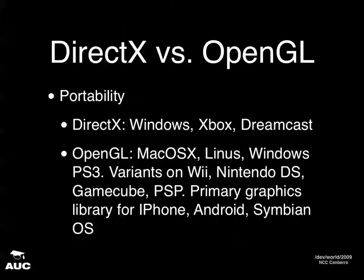DirectX versus OpenGL — portability. DirectX works primarily on the Windows platform as well as Xbox, which was built by Microsoft, and the Dreamcast. OpenGL works on pretty much everything else: Mac OS X, Linux, implementations on Windows, PS3, Wii variants, Nintendo DS, GameCube, PSP, and as you should know, it is the primary graphics library for the iPhone. It's also used on Android and Symbian OS. So the scale of platforms you can develop for with OpenGL is very handy to learn.